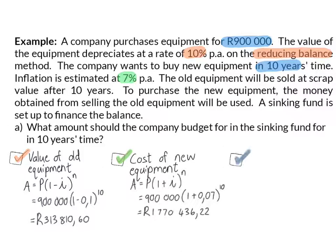And finally, we need to calculate the difference between these two values so that we can find the amount that the company should budget for in 10 years time. And this means that the sinking fund should grow to a value of R1,456,625.62 to ensure that within 10 years, they can buy the new equipment without taking out a loan.